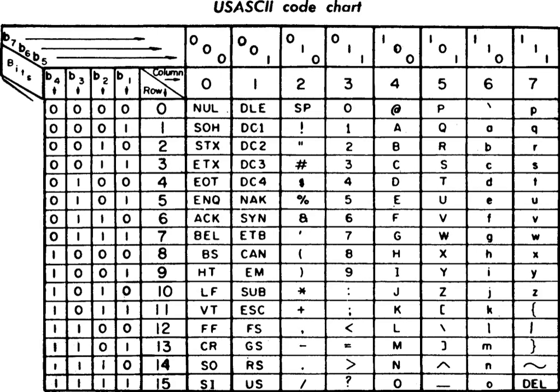Eventually, as 8, 16, and 32-bit computers began to replace 12, 18, and 36-bit computers as the norm, it became common to use an 8-bit byte to store each character in memory, providing an opportunity for extended 8-bit relatives of ASCII. In most cases these developed as true extensions of ASCII, leaving the original character mapping intact but adding additional character definitions after the first 128 characters. Encodings include ISCII and VISCII. Although these encodings are sometimes referred to as ASCII, true ASCII is defined strictly only by the ANSI standard.